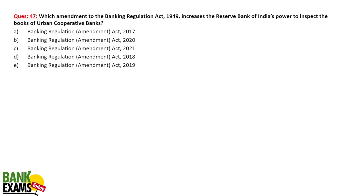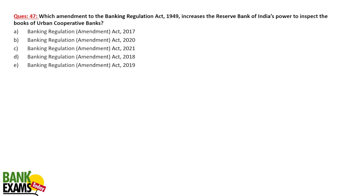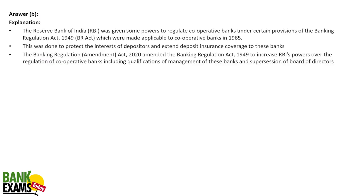Now moving to the Banking Regulation Act. We've covered IBC fairly well, but I'd still recommend watching the conceptual class — especially the difference between PPIRP and CIRP, which I may cover separately tomorrow. Regarding which amendment to the Banking Regulation Act 1949 increased RBI's power to inspect the books of urban cooperative banks — it was the Banking Regulation Act 2020 amendment, under which urban cooperative banks came under RBI.